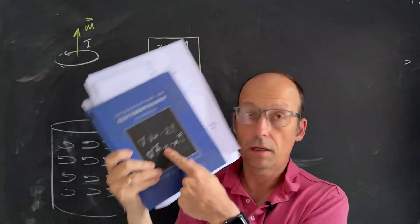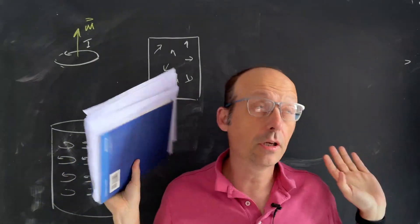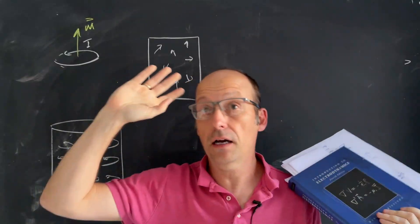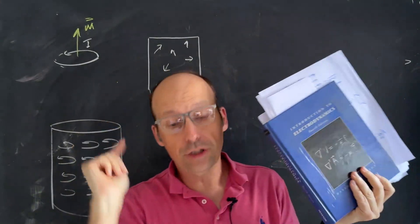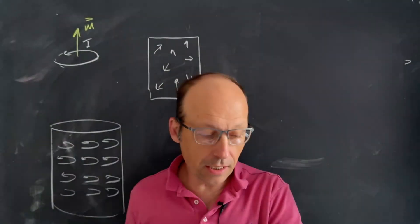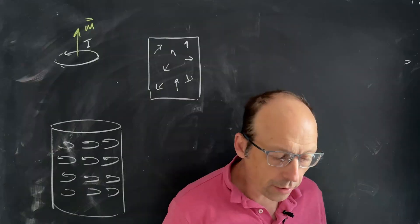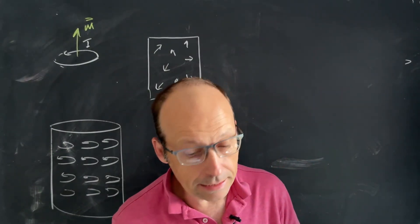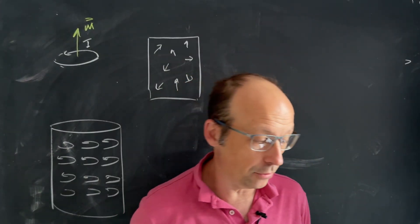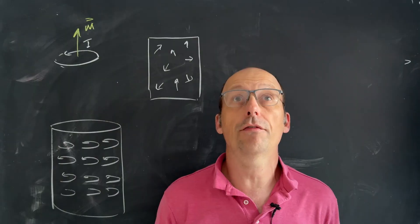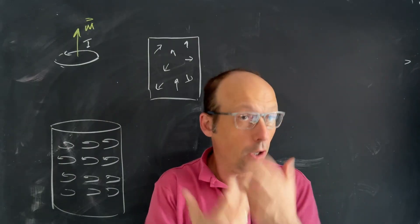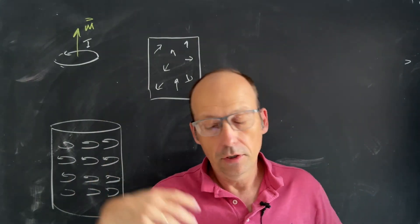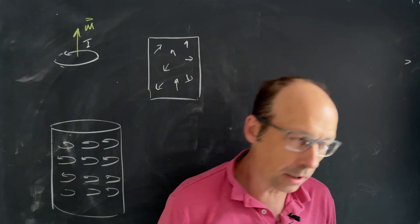I'm working through electrodynamics. We're in the first semester of electrodynamics — that's electric and magnetic fields. We're in Chapter 6, so I'm going to give you my shortest possible summary of the key ideas in Chapter 6. We have to start off talking about magnetic fields and materials in magnetic fields.